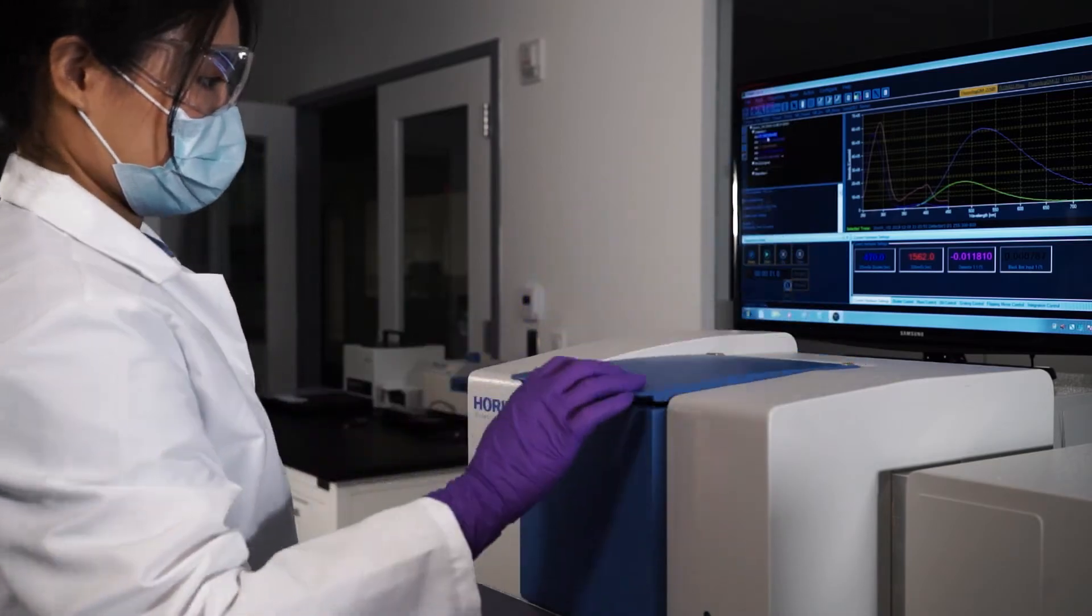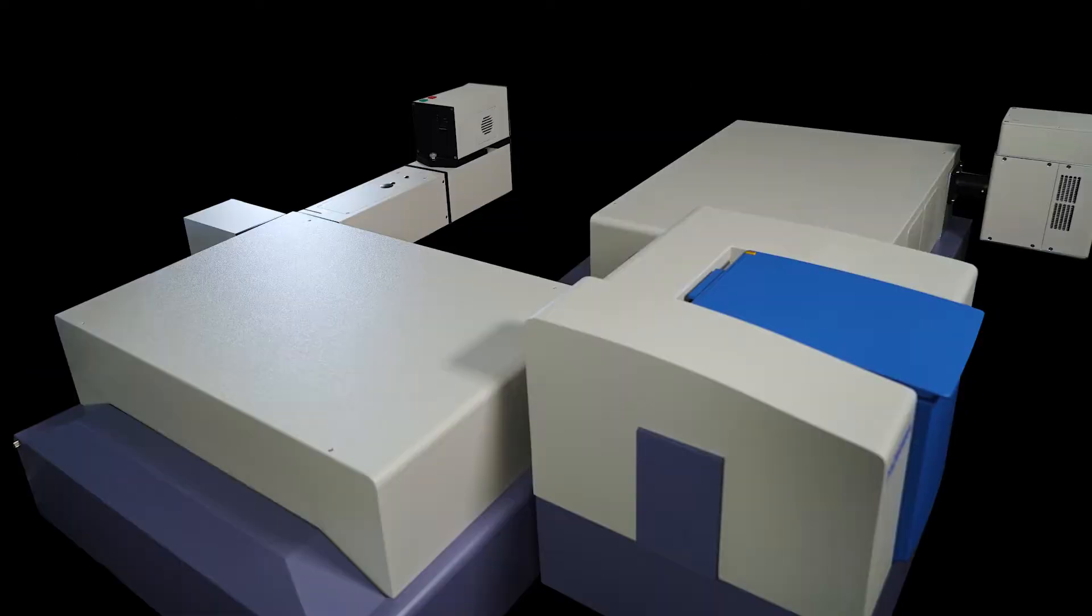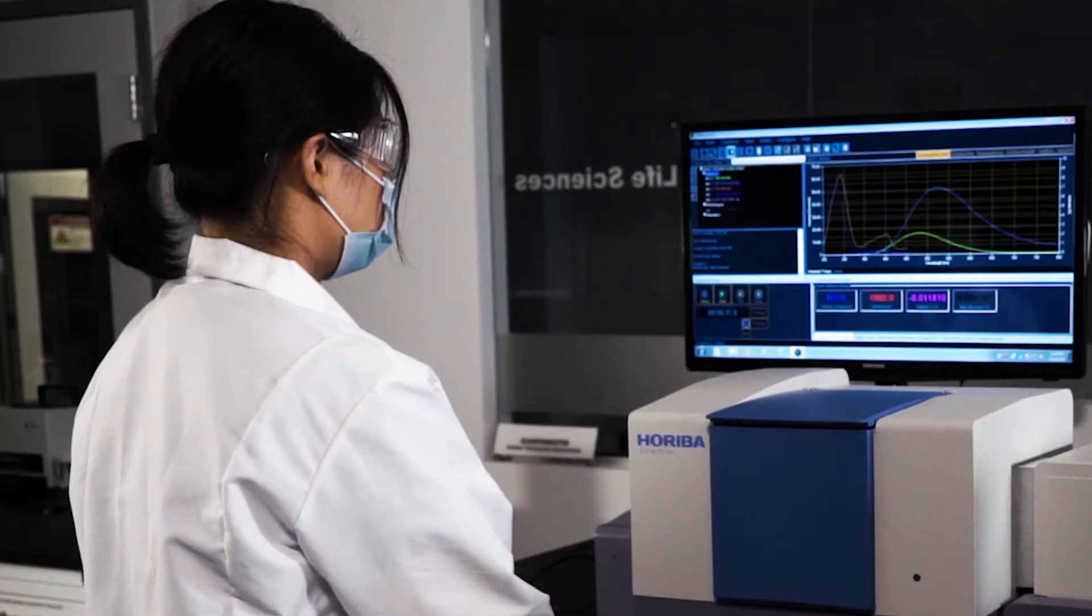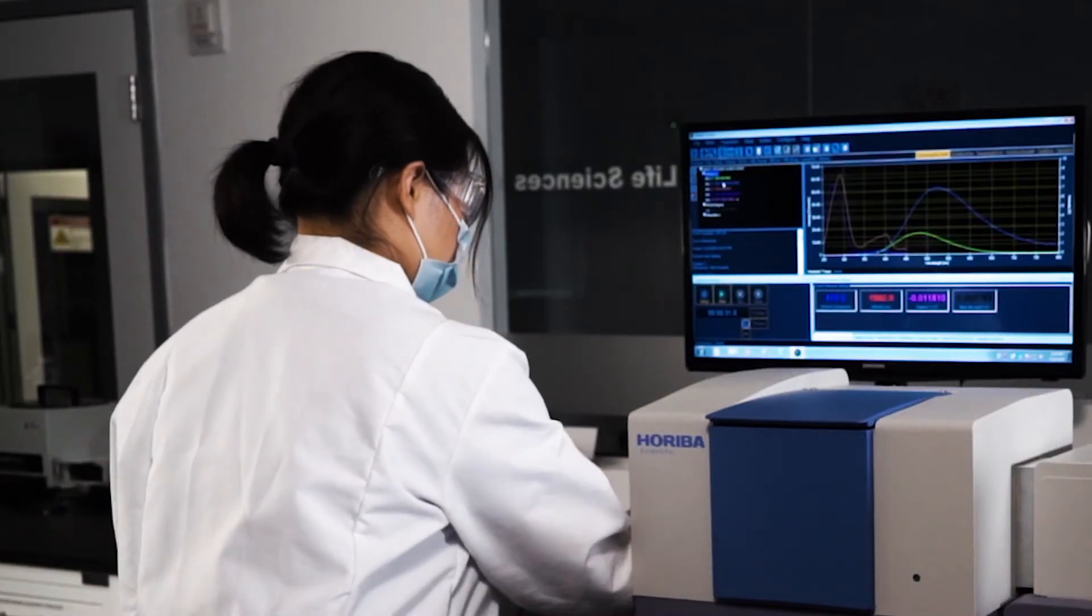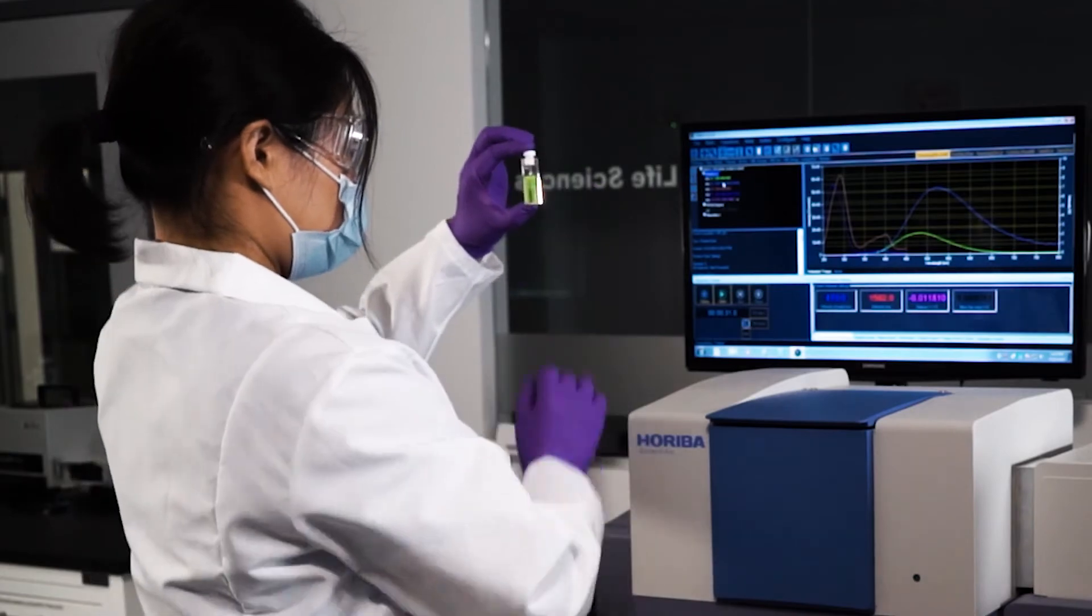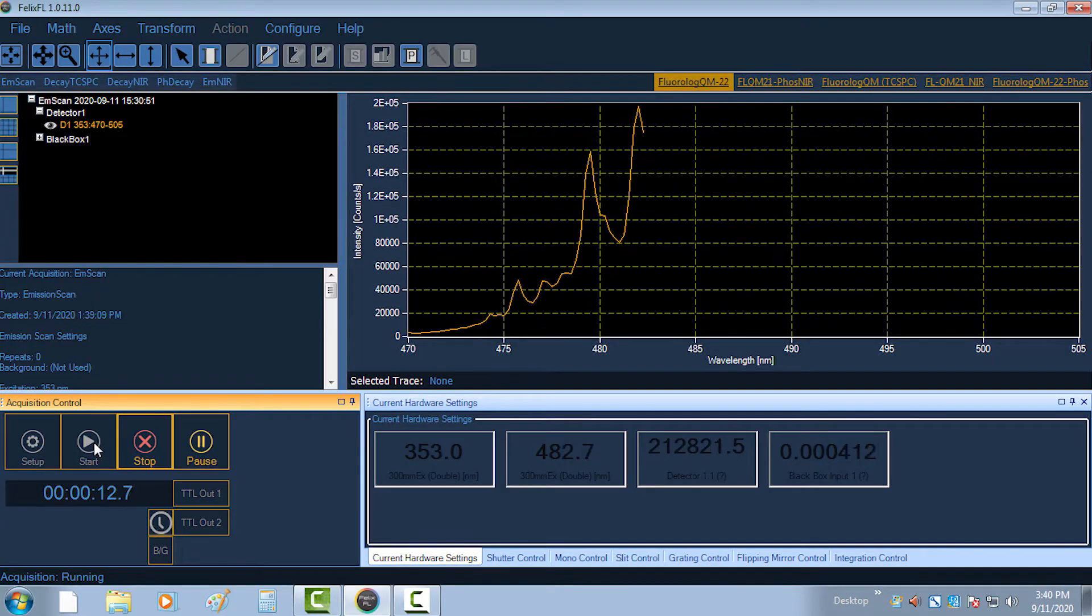The FluoroLog QM can be equipped with single or double monochromators, offering the use of up to six detectors. The standard configuration features a highly sensitive, cooled PMT housing with the ability to operate in four distinct operating modes.